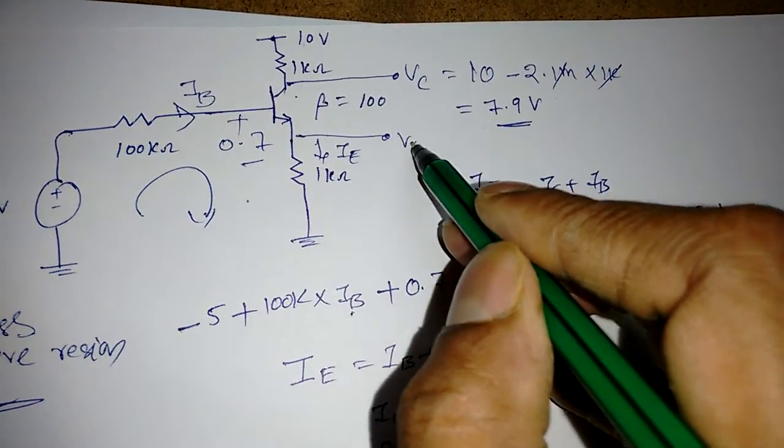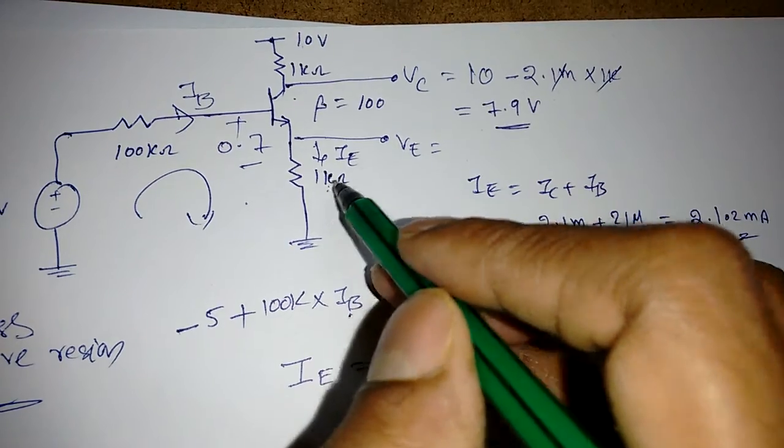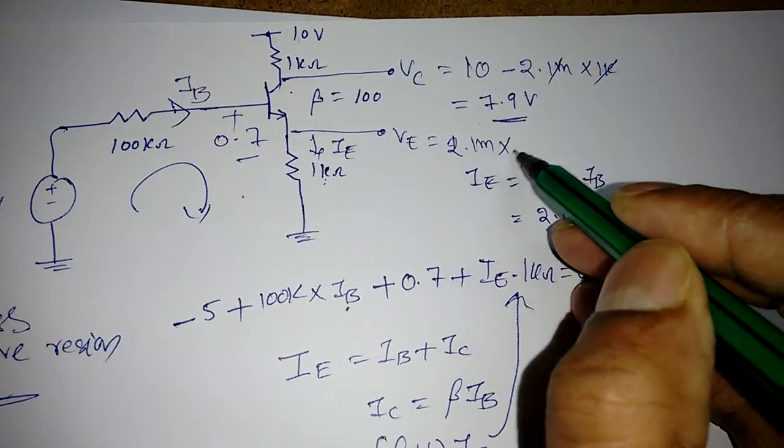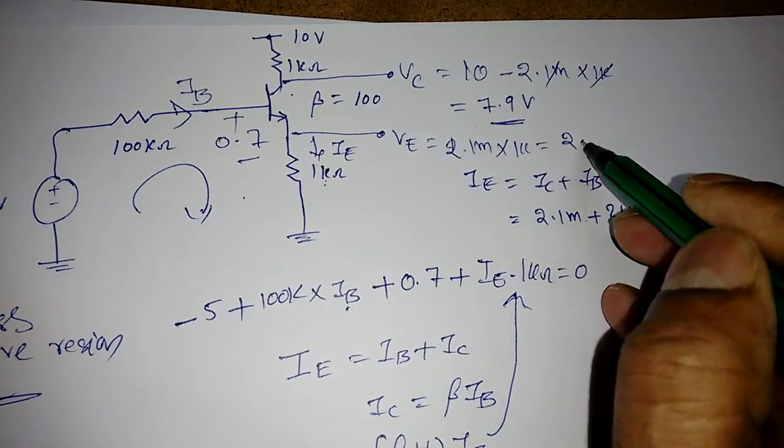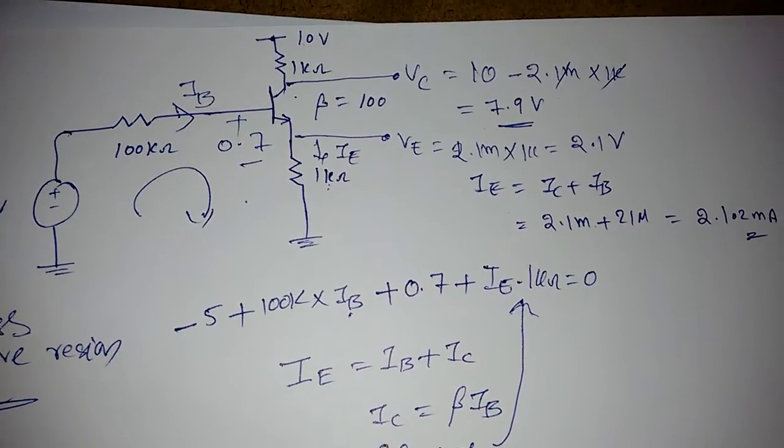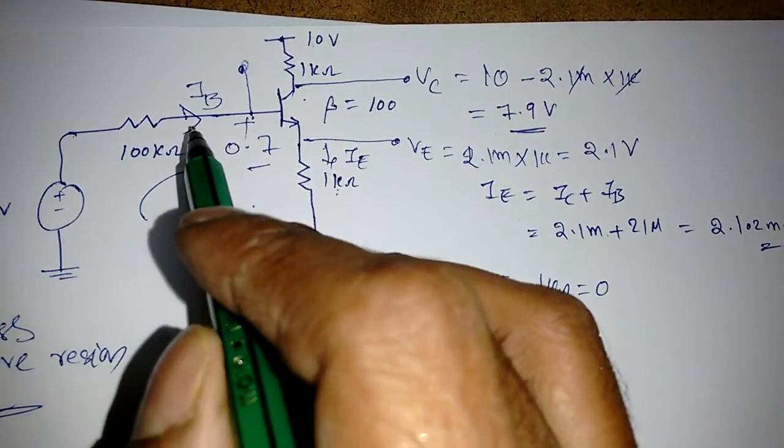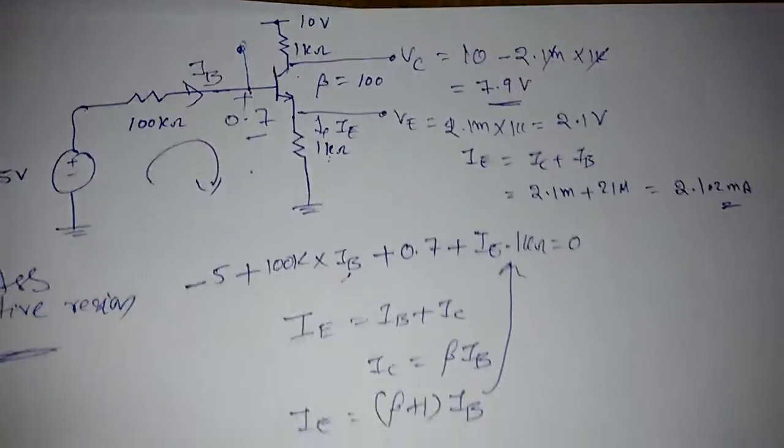Now finding voltages: What is VA? VA equals this current times this resistor, so IE × 1kΩ = 2.1 mA × 1kΩ = 2.1 volts.